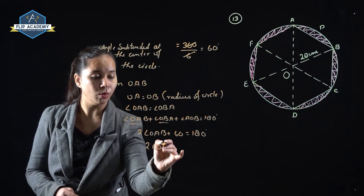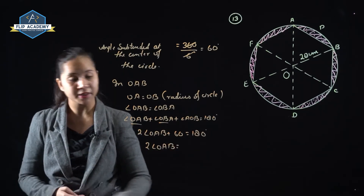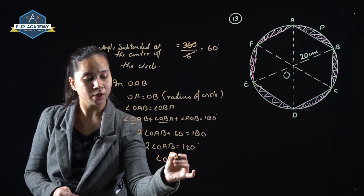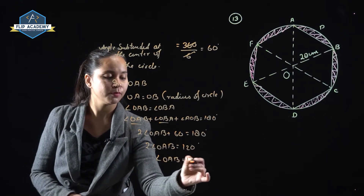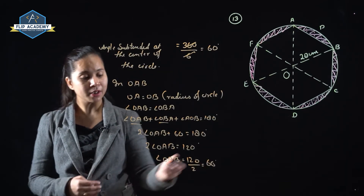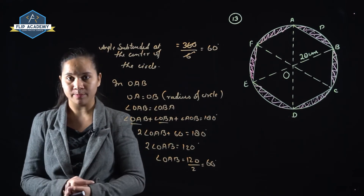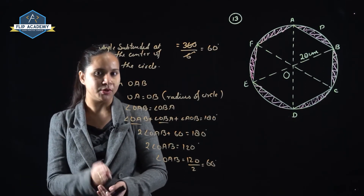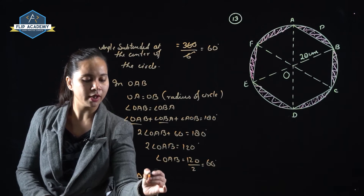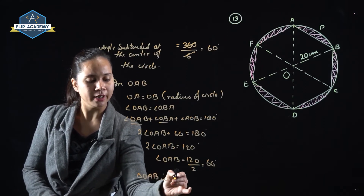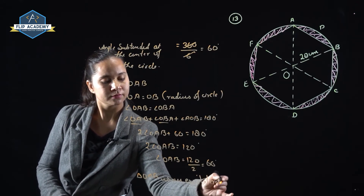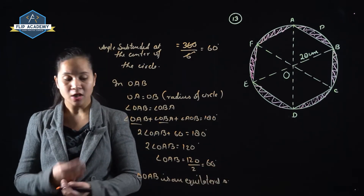So, 2 × angle OAB = 180° − 60° = 120°. Therefore, angle OAB = 120° ÷ 2 = 60°. This means all three angles of triangle OAB are 60°. If all three angles of a triangle are 60°, it is called an equilateral triangle. Hence, triangle OAB is an equilateral triangle.